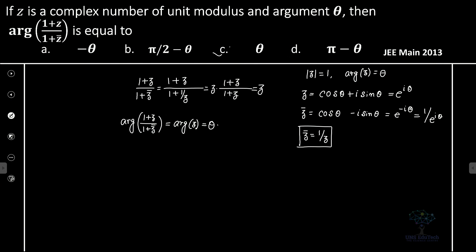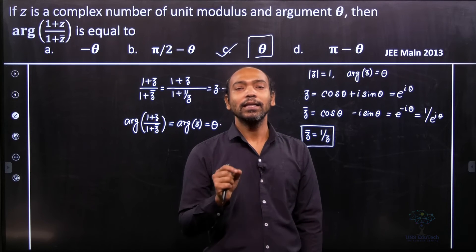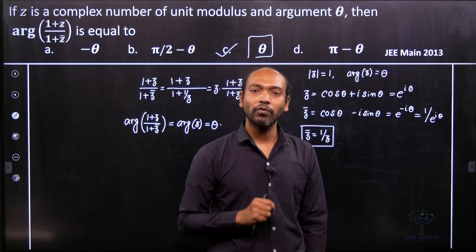So therefore, obviously for this particular problem, option c is the correct option. So here you just always remember the basic representation of complex number.